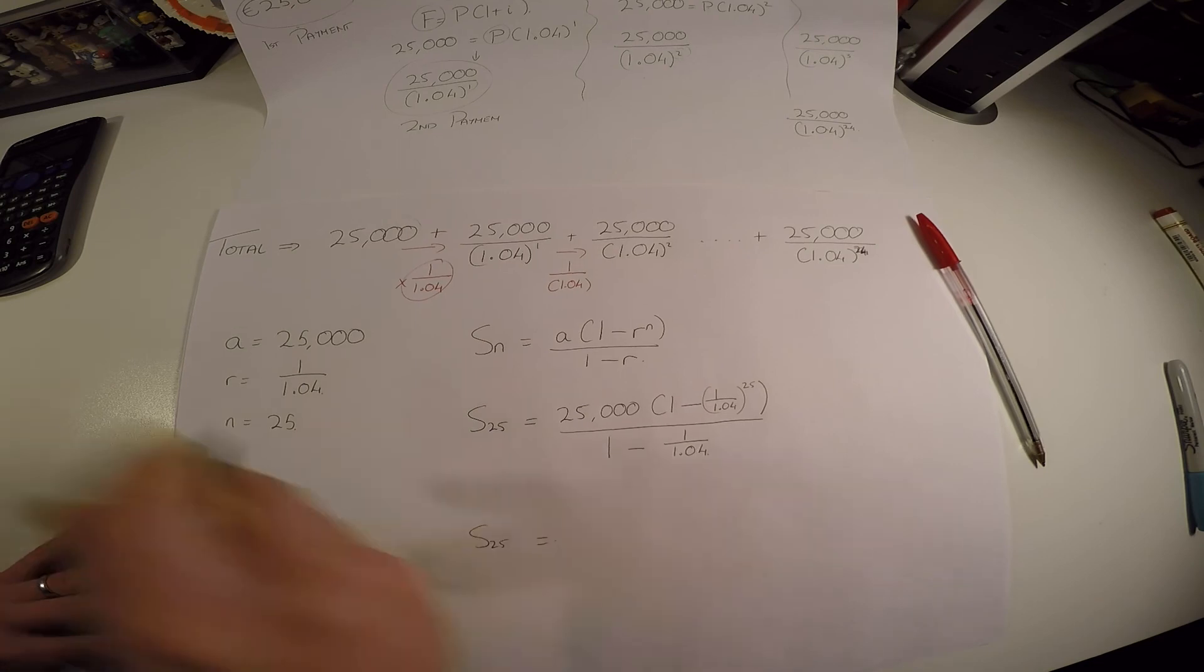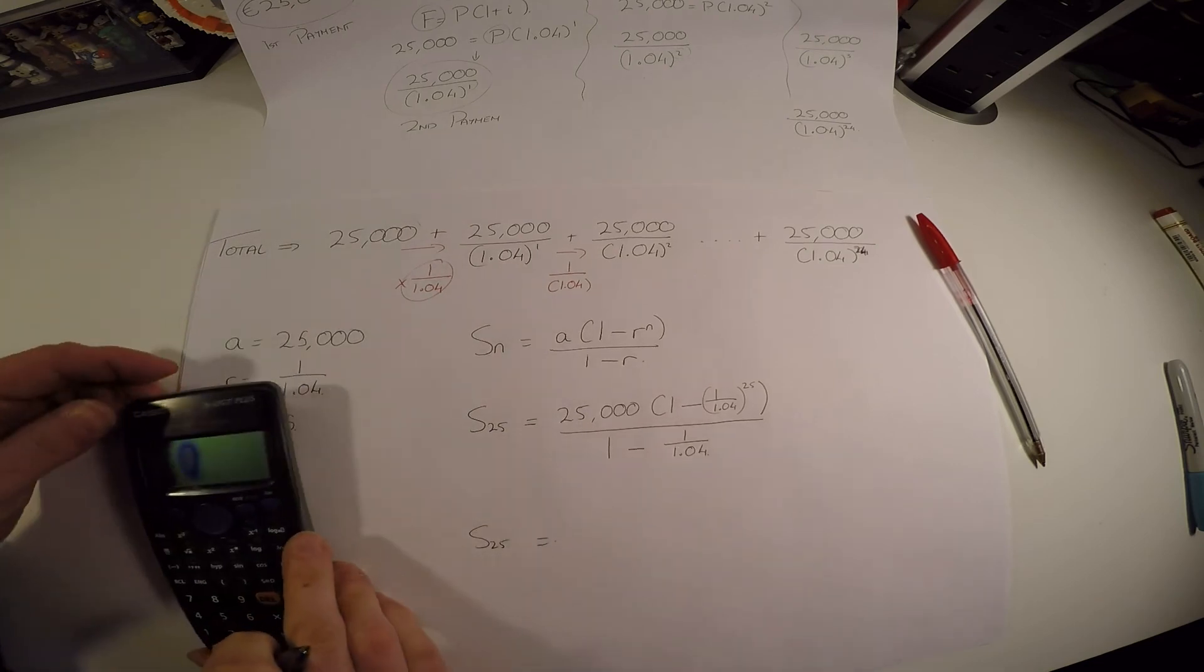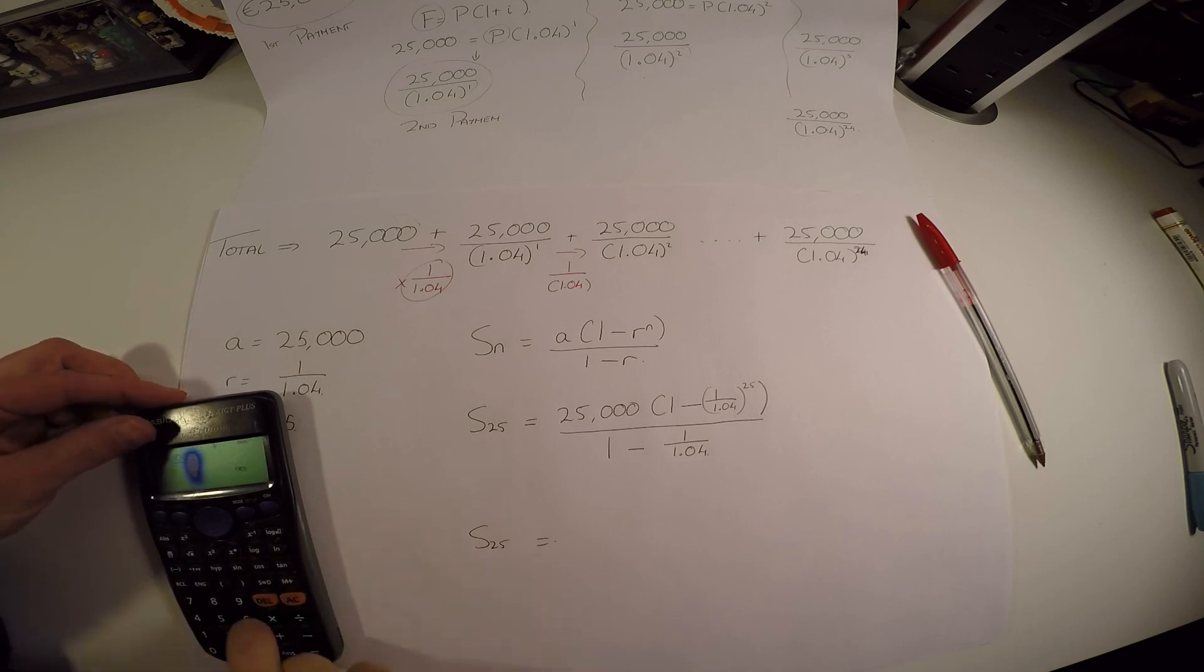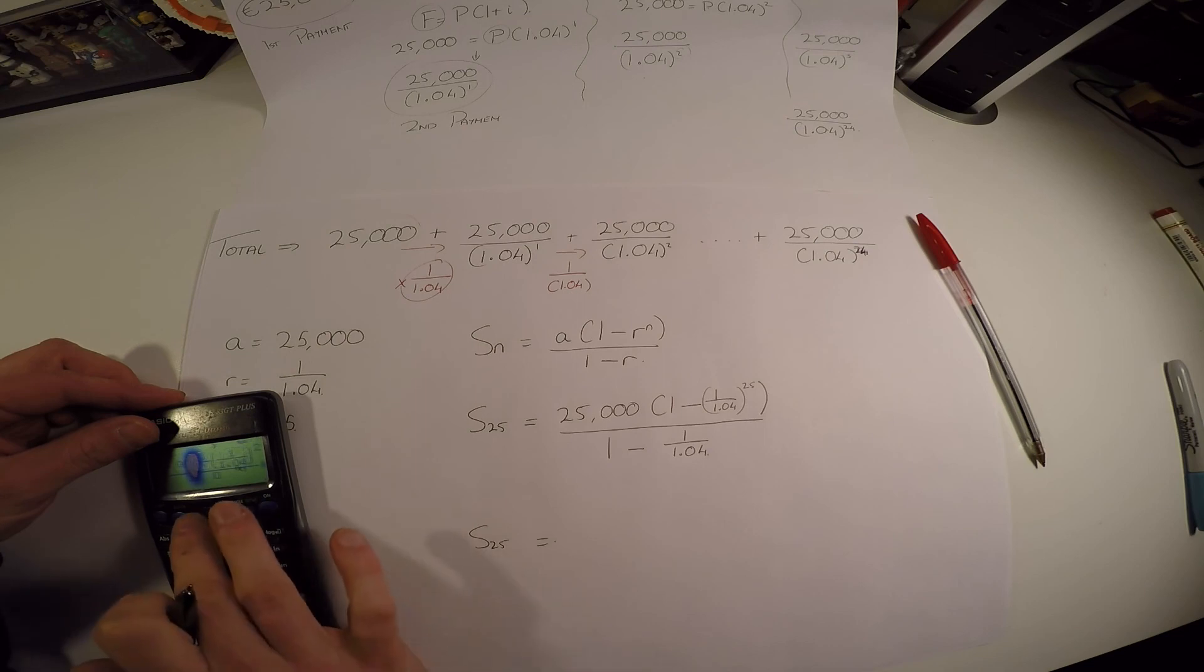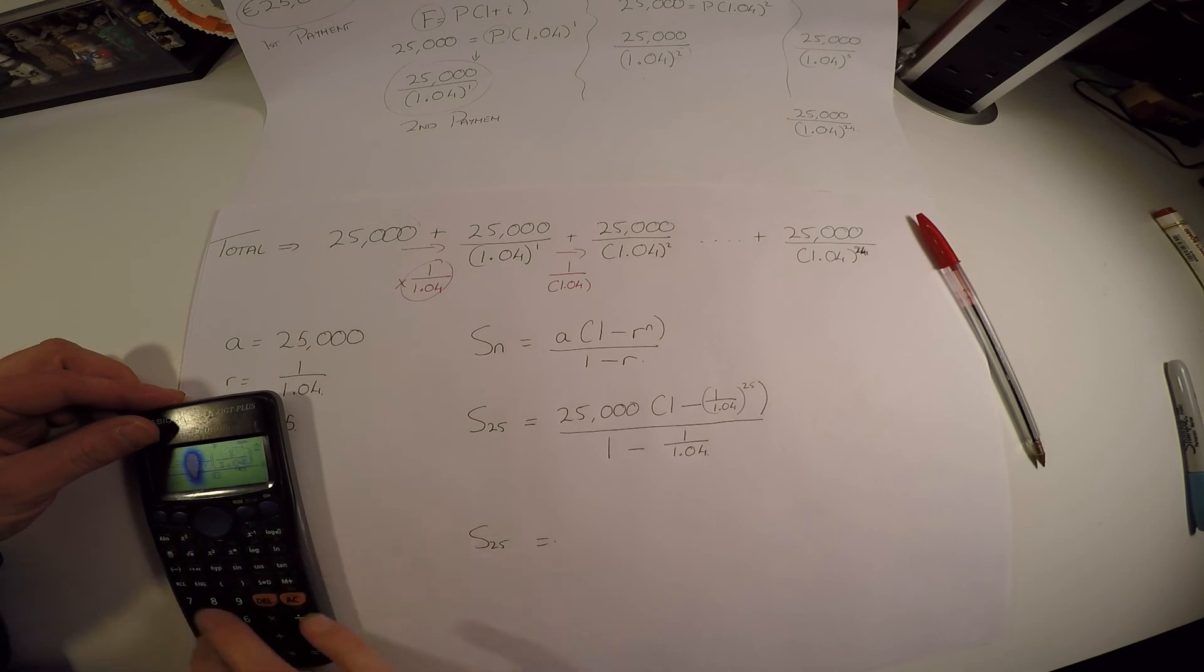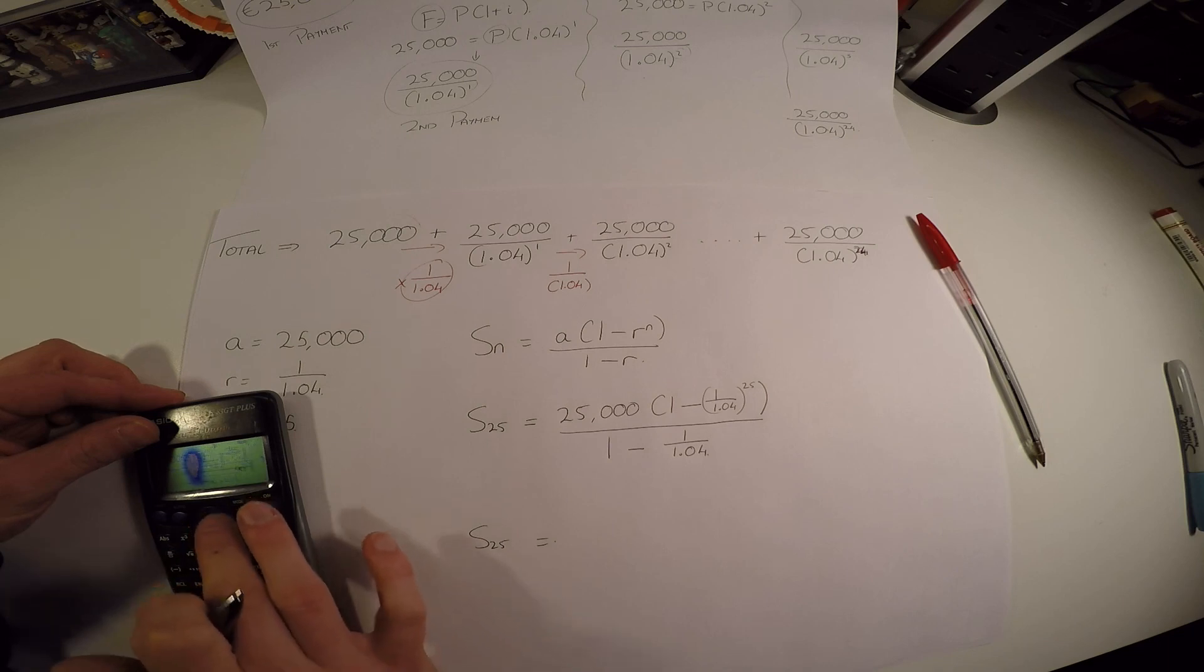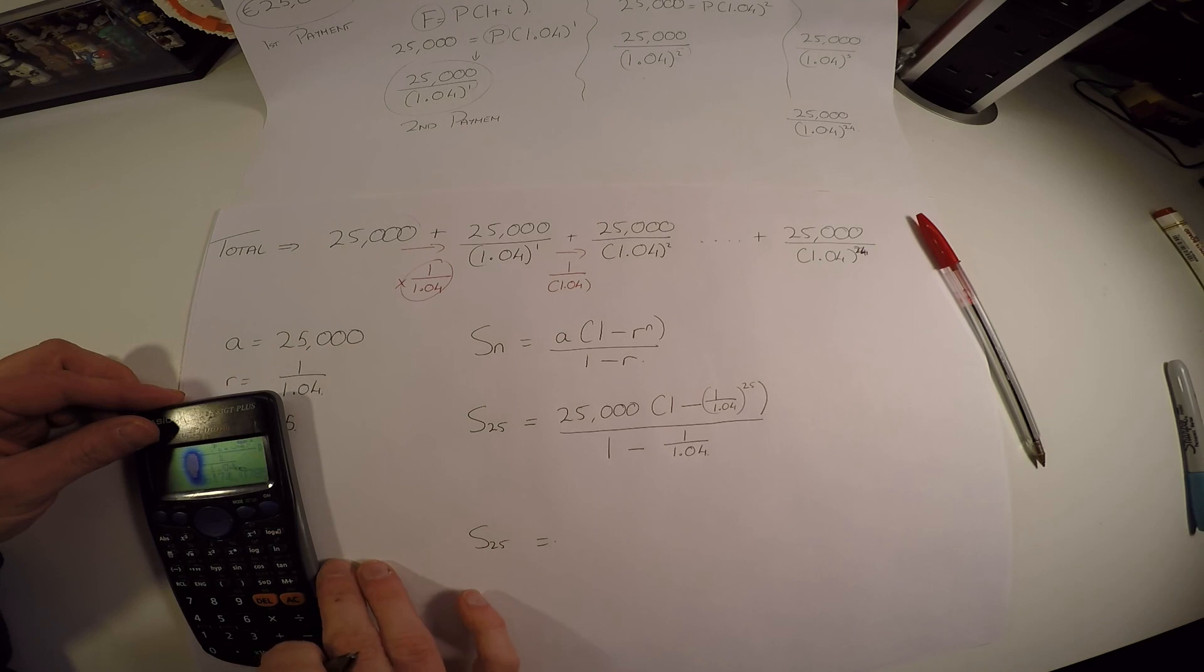So S_25 equals: I'm going to put this in, 25,000 times 1 minus 1 over 1.04 to the power of 25, close my brackets, and that is divided by 1 minus 1 over 1.04, and equals, and I get this.